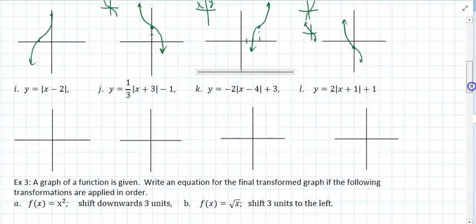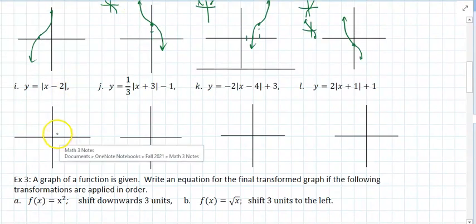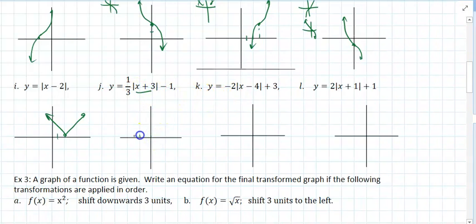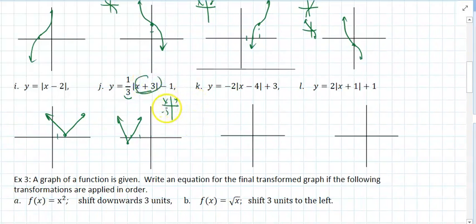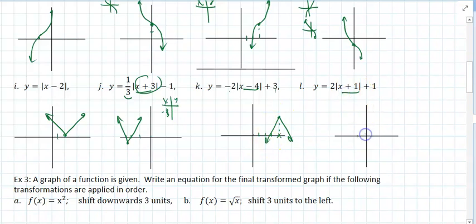We need to master these graphs. Absolute value — shifted 2 units to the right. Again, you don't have to pick any points. 3 units to the left, 1 unit down. This is going to compress it by a factor of 3. If it says sketch a graph, a rough graph will do. If you're not sure, pick the 3 points — where that equals 0, a point above, a point below. This is going to shift the graph 4 units to the right, reflect it down, and shift it up 3 units. Shift an absolute value 1 unit to the left, 1 unit up — it's going to compress by a factor of 2. If it says sketch, that's good enough.